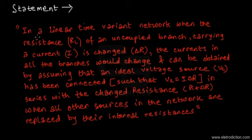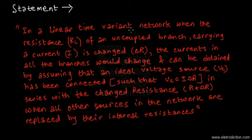In a linear time-variant network, time-variant basically implies that the circuit parameters — the values of the resistances and so on — can basically change with time.